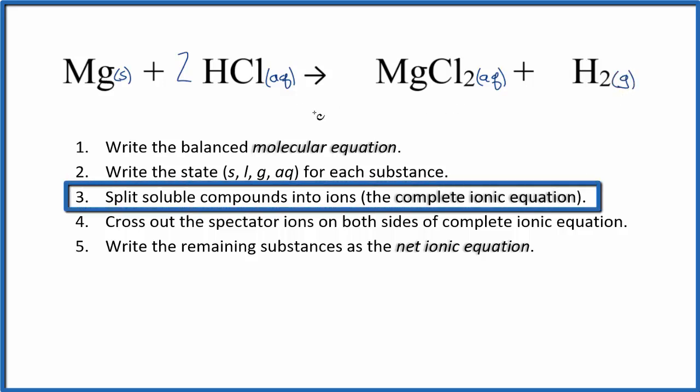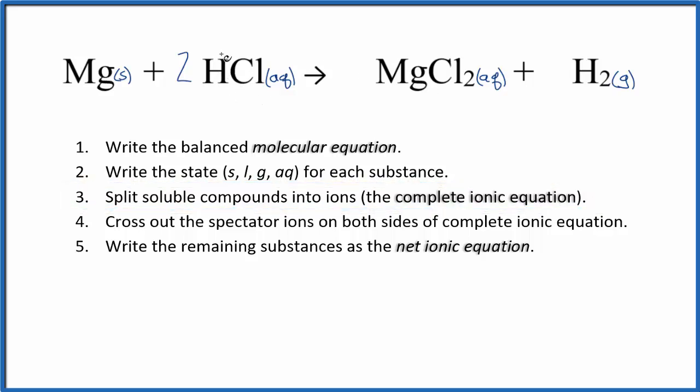The next step is to split these soluble compounds here into their ions. So hydrogen, group 1 on the periodic table, that'll have a 1 plus charge. Chlorine, group 17, that has a 1 minus. On this side, magnesium, that's in group 2, it has a 2 plus ionic charge. And remember the chlorine we said was minus. So we have our ions up here.